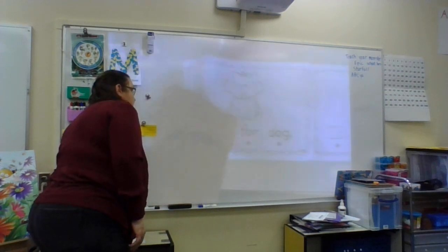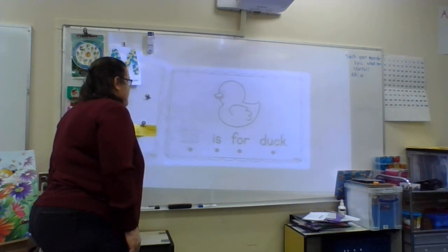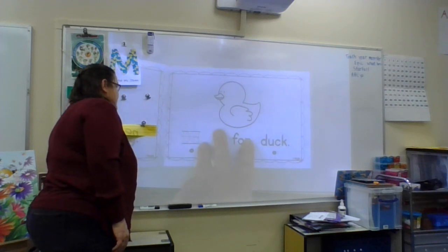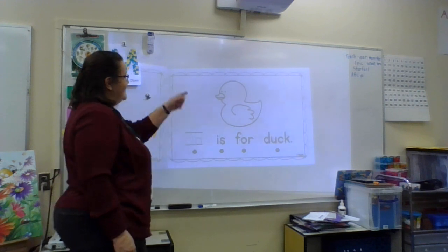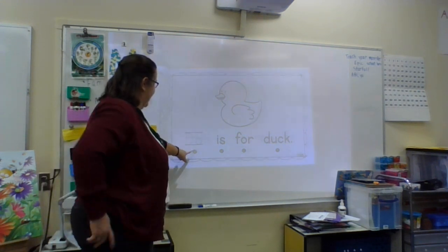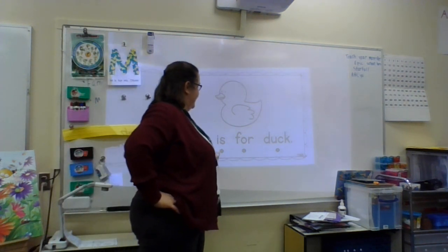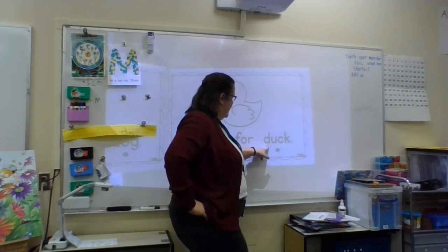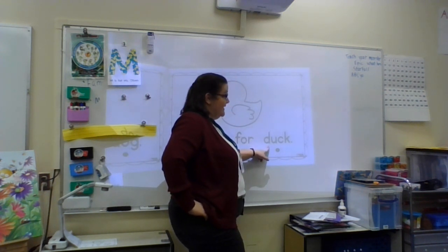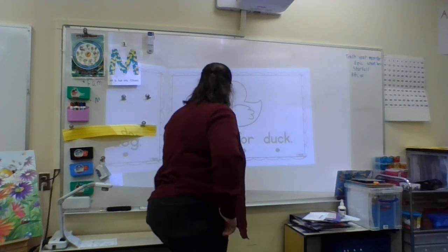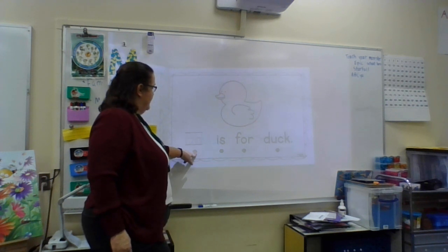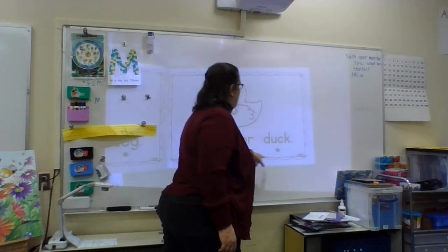We used the picture clue to help us figure out words that we don't know. Or we could use the sounds. We didn't think of duck. D is for — if we sound out the letters in this word, we could try and figure out what the word is. We know D makes the D sound. U makes a — duck. That's the word. So let's touch and read it one more time. D is for duck.